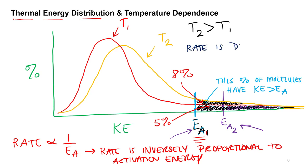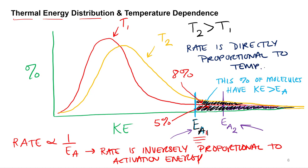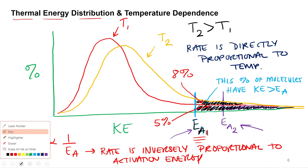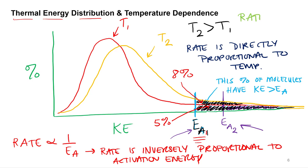Rate is directly proportional to temperature. And it's actually for a couple of reasons. One is that more molecules have enough kinetic energy — that definitely happens. But what were the other things that needed to occur for a reaction to occur?